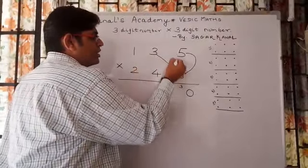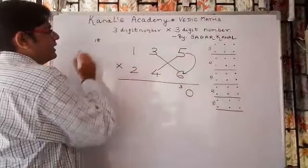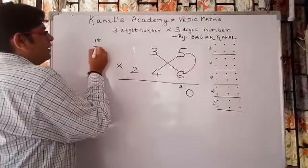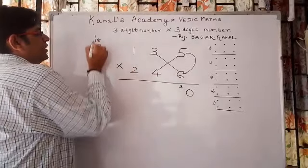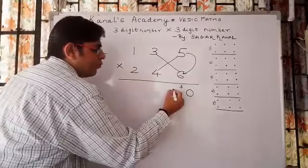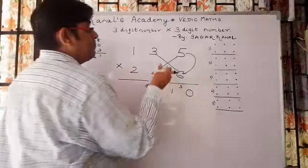Second step: cross multiply these numbers. 6 times 3 is 18, 5 times 4 is 20, add this 3 here - 41. Write 1, carry 4.